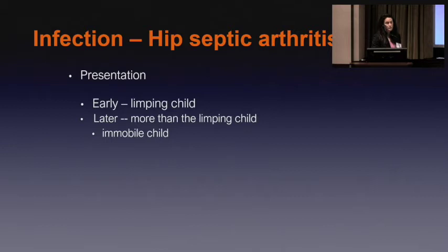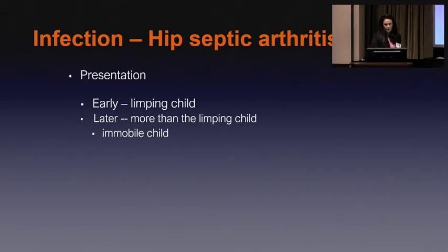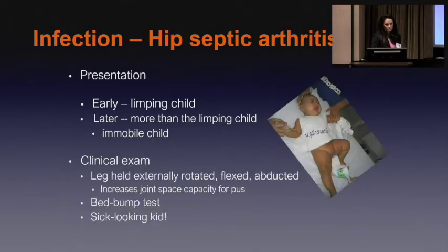In terms of hip septic arthritis, early on it's going to be the limping child — the kid who comes in, doesn't really want to put weight on it, but will. And then a little bit later in the course, that's when we're talking about the immobile child, the child who just won't walk. On exam, this is very classic — a flexed, externally rotated, and abducted hip.